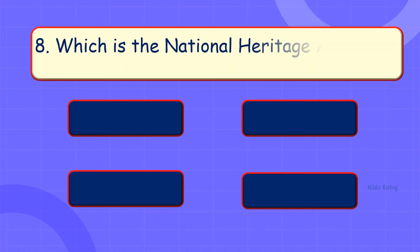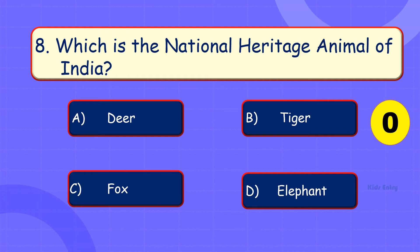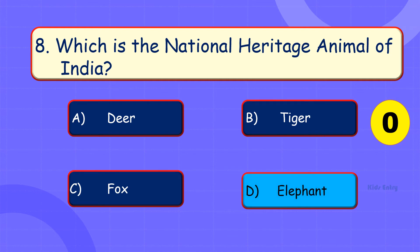Which is the national heritage animal of India? A. Deer. B. Tiger. C. Fox. D. Elephant. Answer is Option D: Elephant.